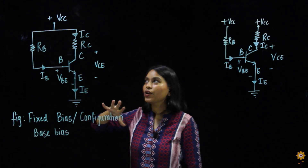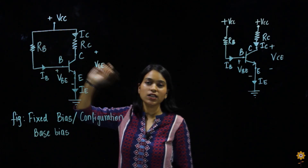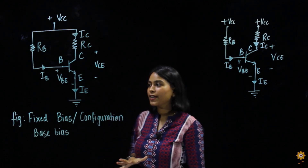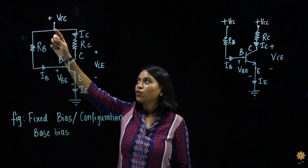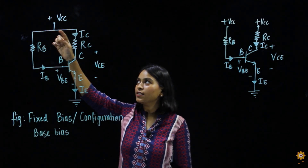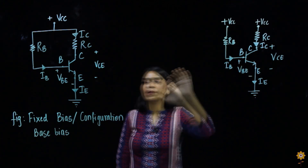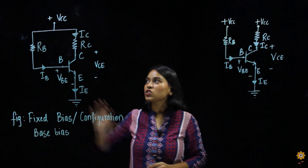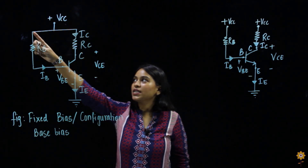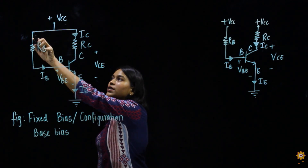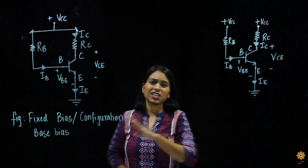A DC supply voltage VCC is applied to the circuit at the top, between the base and collector. I have redrawn the diagram on the right hand side. Both diagrams are the same — the only difference is that the connecting wire has been removed and the VCC potential is now shown explicitly at both points, labeled as plus VCC and plus VCC.